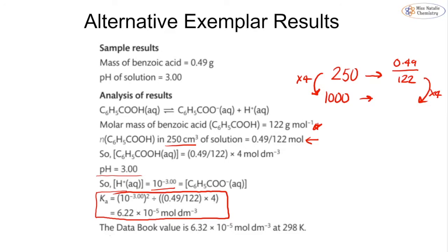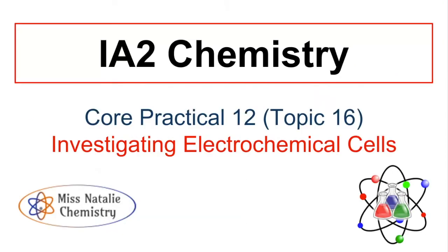I've not been able to find many past papers on this because these sorts of calculations tend to show up in unit 4 rather than the actual practical paper. The practical aspects may be related to how you actually carry out the titration or how you make the standard solution. They may ask you to do the calculation, but most of that is going to come up in unit 4. So let's move on to investigating electrochemical cells, which is our core practical 12. This is moving into unit 5 content at topic 16.